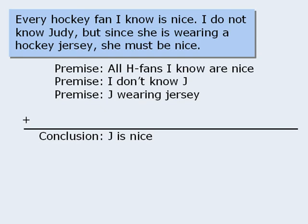Before we go looking for assumptions, let's examine what we have so far. Does this seem like a very strong argument? In other words, how well does the conclusion follow from the premises? Like most arguments on the GMAT, this argument is certainly not perfect. Sure, it's possible that Judy is nice, but it's also quite possible that she is not. The author has made a pretty big leap from the given premises to the conclusion — a leap that consists of several unstated assumptions.